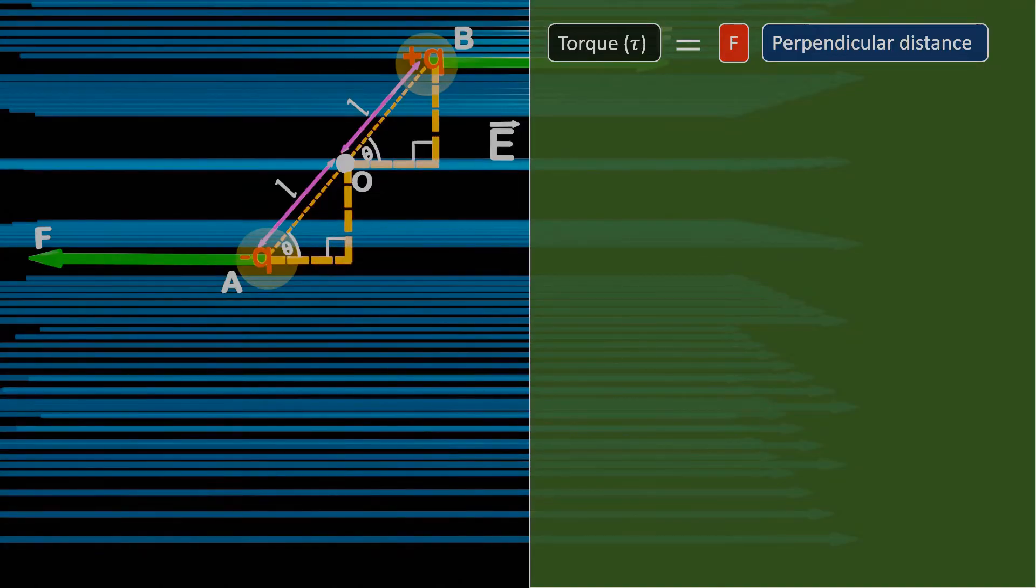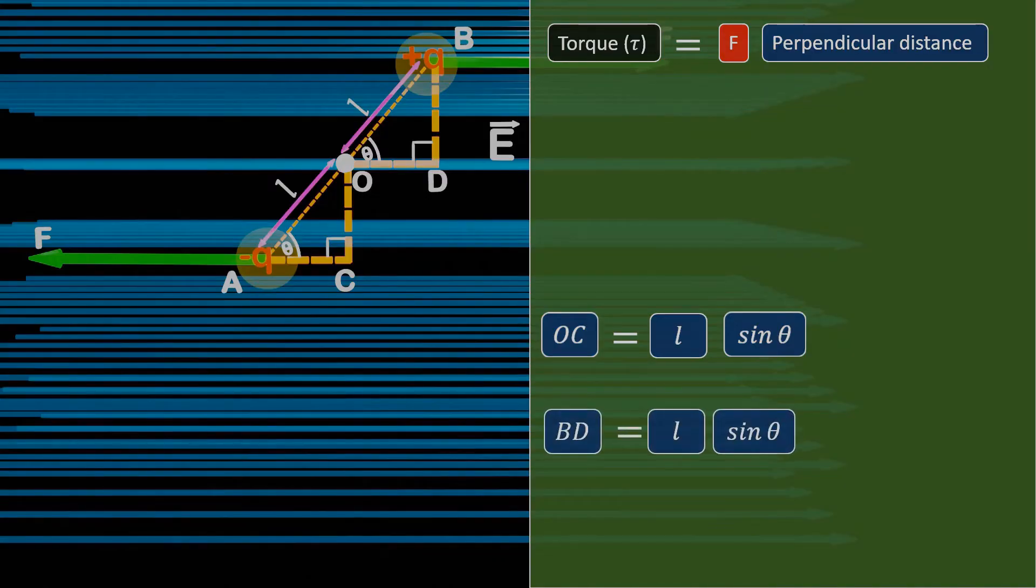Let's say, for the negative charge, the perpendicular distance from the centre of rotation is OC. And similarly, for the positive charge, it is BD. We know that sin theta is equal to OC divided by AO, where AO is equal to L. Using this relation, we can say that the perpendicular distance OC is equal to L sin theta. Similarly, for the positive charge, BD will also be equal to L sin theta.